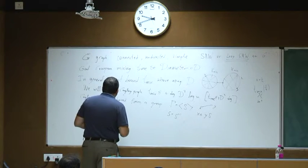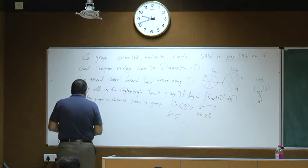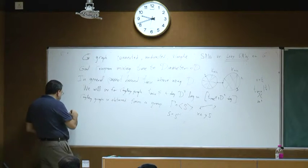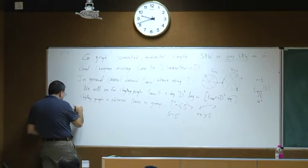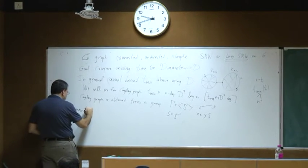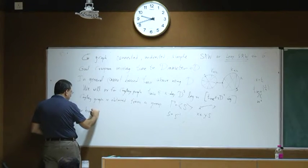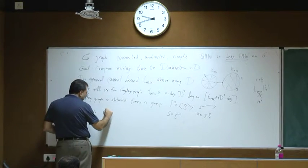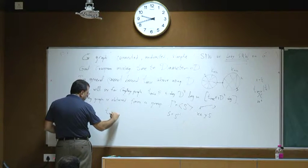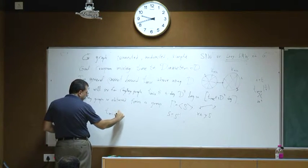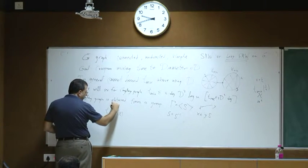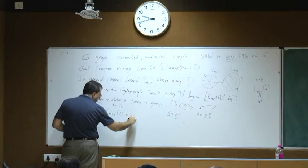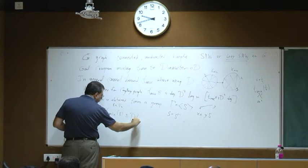Now I want to talk about lower bounds for the mixing time using the diameter. There is one trivial lower bound, which says that for ε less than 1/2, the mixing time is at least the diameter over 2.